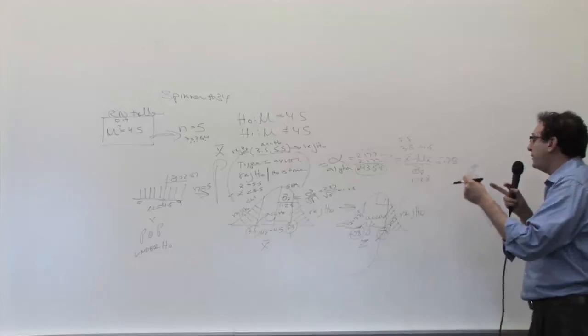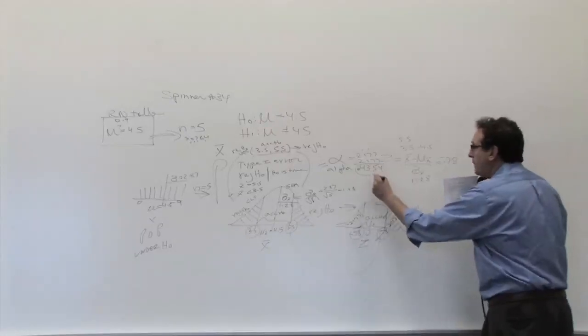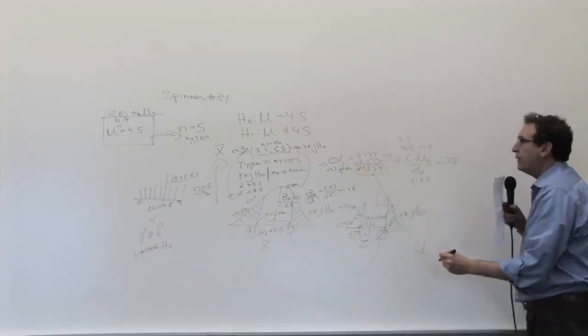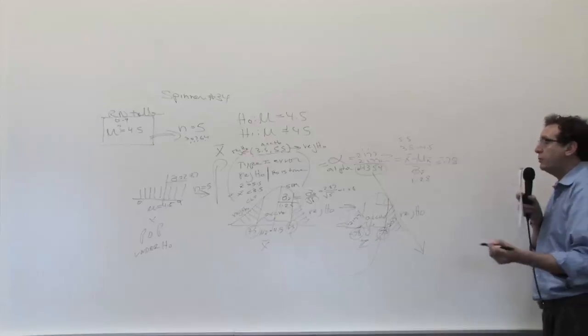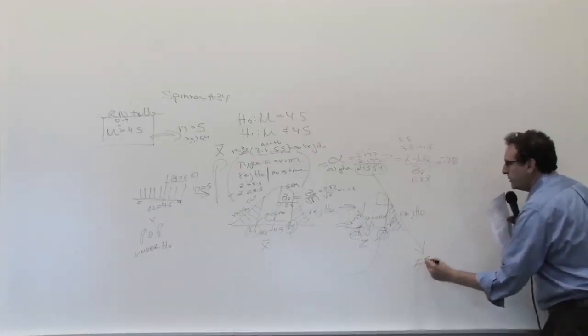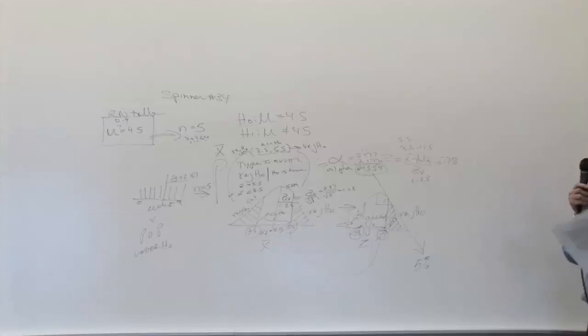After you get an alpha, and 44% you shouldn't be happy with, the question is I want to make it smaller. How much smaller? I asked the class to do it at 5%. That's a traditional number. We talked a little bit about why, even though there's no great reason why.